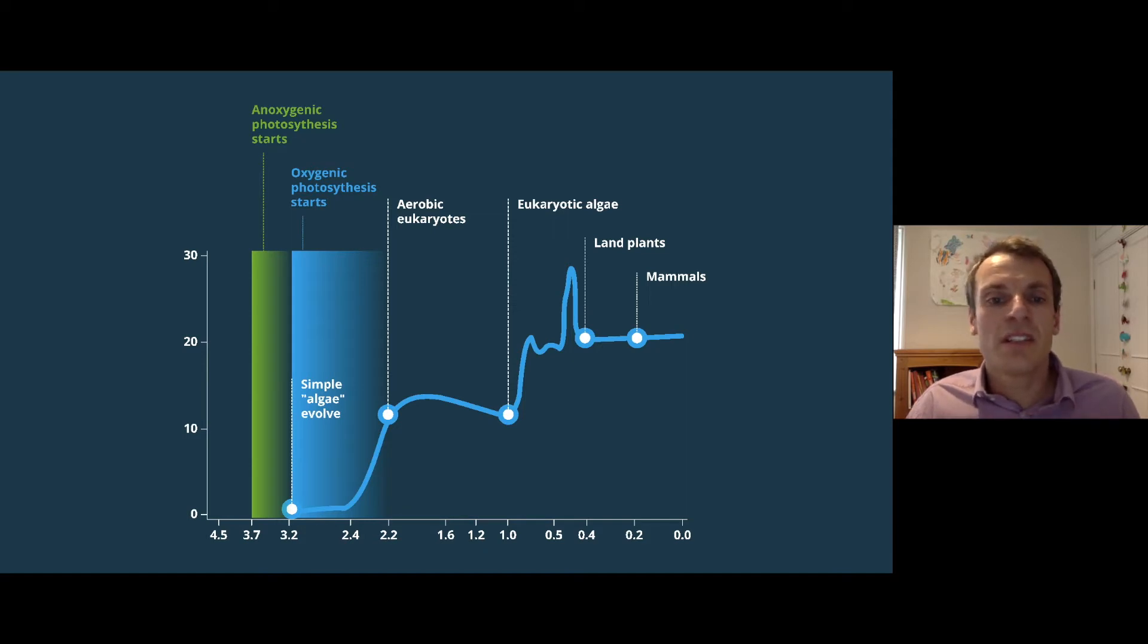Through photosynthesis, they started capturing sunlight, fixing carbon dioxide, and releasing oxygen, which resulted in a great oxygenation event that enabled the evolution of eukaryotic life.